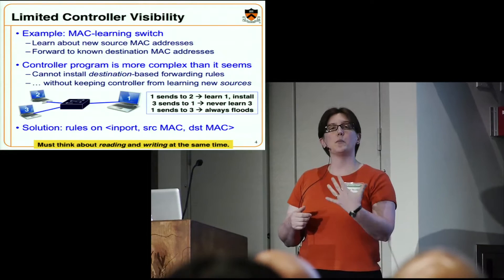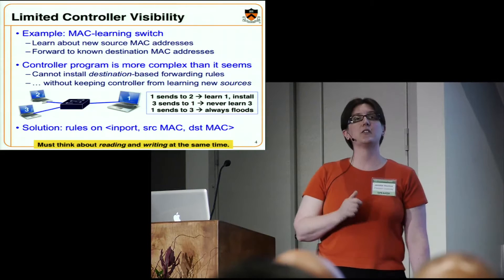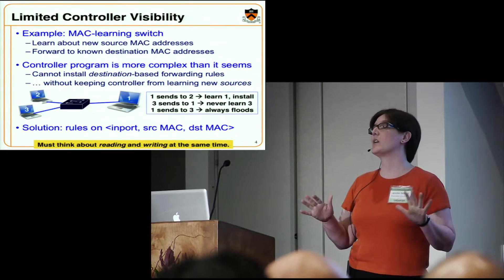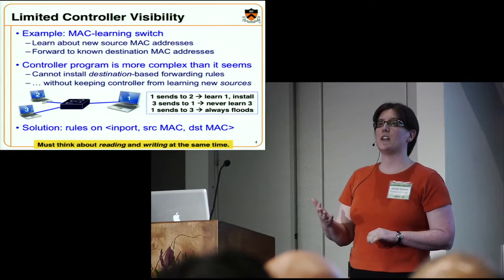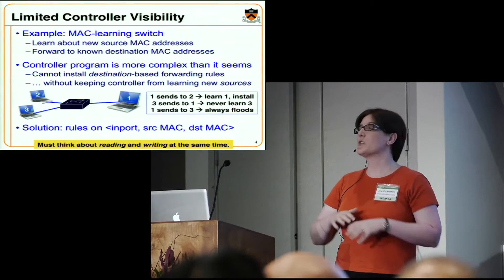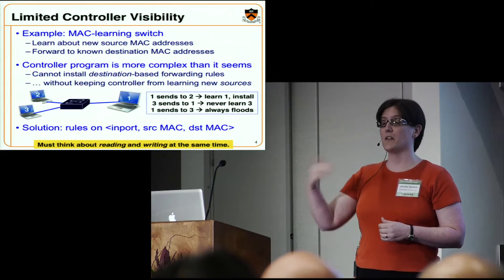Imagine every time I get a packet from a new source, I send it to the controller, and the controller learns to forward packets in the reverse direction and installs a rule in the data plane. Suppose host 1 sends a packet to host 2 — the controller installs a rule saying in the future, if anyone sends a packet to host 1, forward it out the link connected to host 1. The problem is that any future packets from sources not yet learned won't get learned. If host 3 sends a packet to host 1, it matches a forwarding rule, but the controller never learns how to forward in the reverse direction back to that source, so packets from 1 to 3 would repeatedly be flooded.